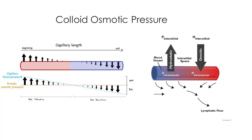Hydrostatic pressure is the force pushing fluid out — it's the dominant force at the arterial end. Oncotic pressure, because of the protein, dominates bringing the fluid back in on the venous side. That's a concept we're going to expand on when we get into blood vessels and blood flow in the next chapter.